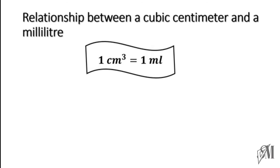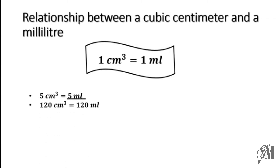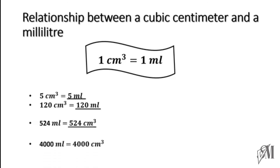So if you get fill-in-the-blank questions, it will be very easy. For example, 5 cubic centimeters is equal to 5 milliliters, and 120 cubic centimeters is equal to 120 milliliters. And vice versa — if a value is given in milliliters, you can write that same value in cubic centimeters.